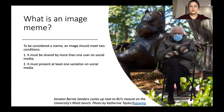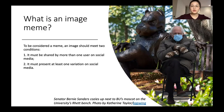The first problem here is: what is the meme? In previous work, researchers mostly focus on text memes — like how they spread and how they become popular. In this paper, we want to understand those image memes which become viral across communities. Specifically, what visual elements help an image meme go viral. We define an image meme as one that meets two conditions: first, it must be shared by more than one user on social media, and second, it must present at least one variation on social media.